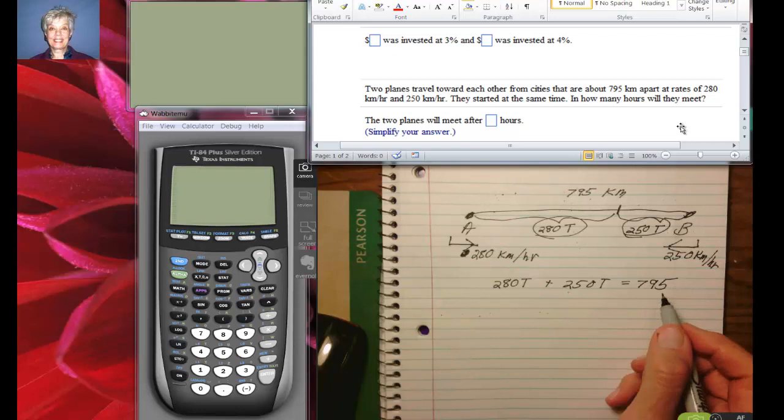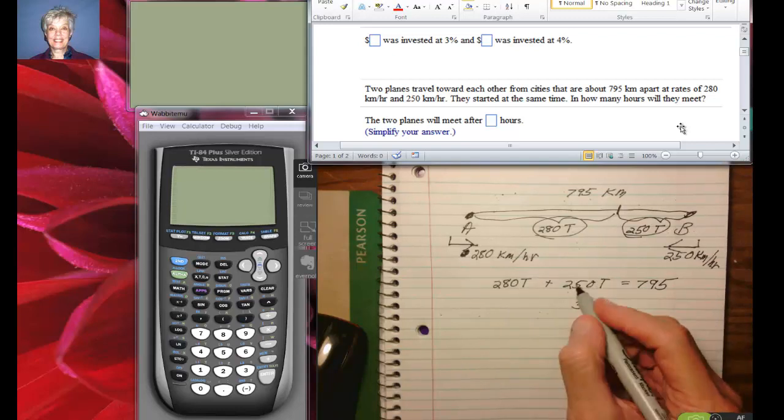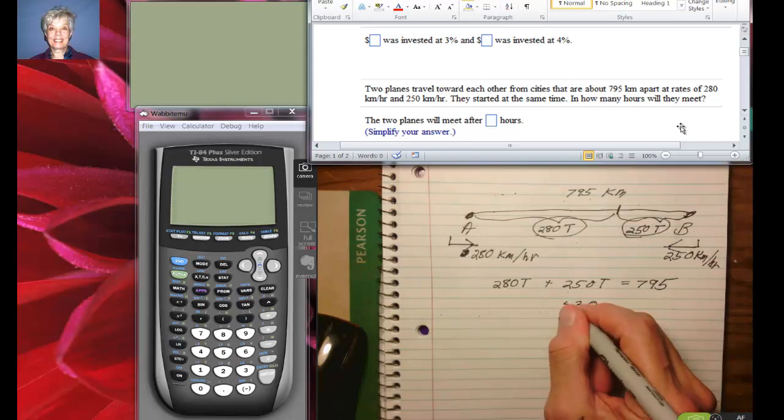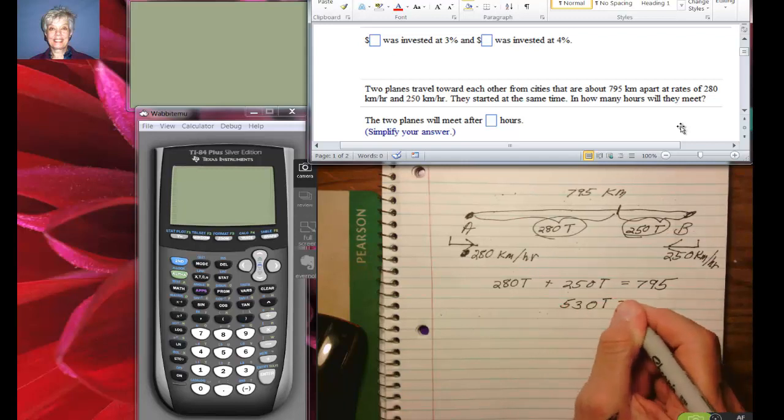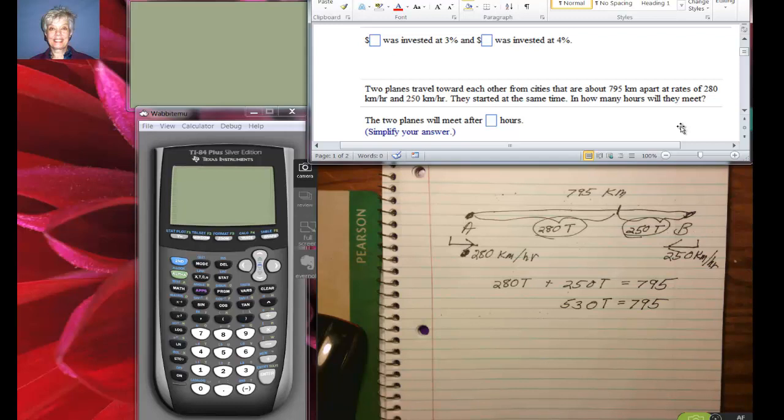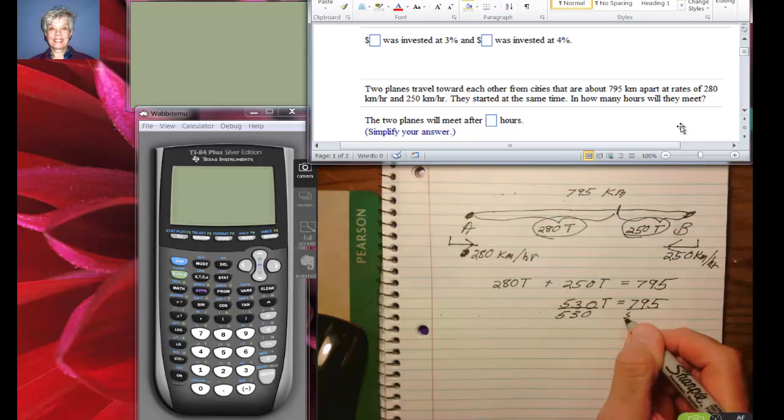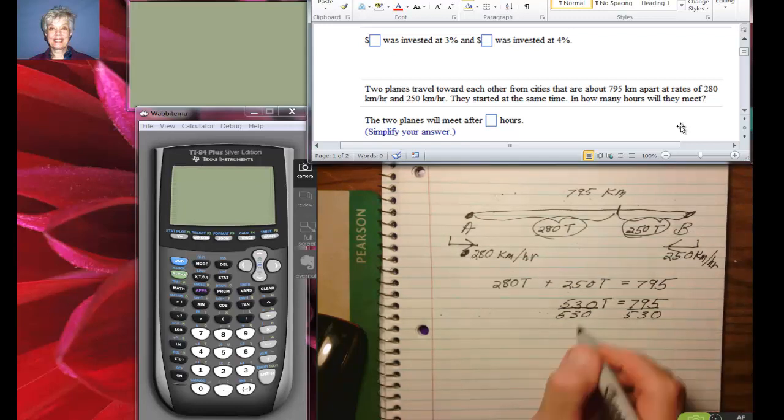So what are we being asked here? If they started at the same time, after how many hours will they meet? I don't like the look of that, but we're going to go with it. We're going to be brave. Divide by 530 and divide by 530. Cancel out this 530, and I am going to go over here and let my calculator do the walking. Turn it on, turn it on. I have to do it twice, that's silly.